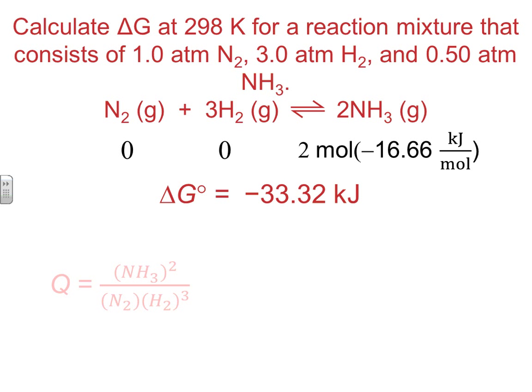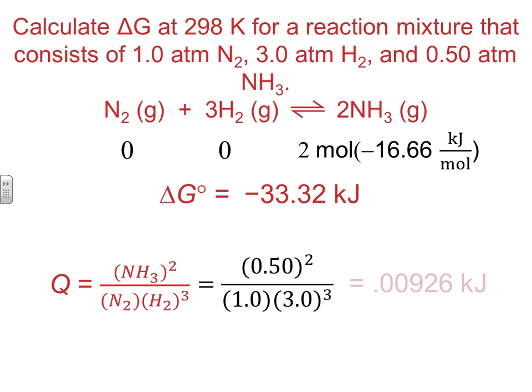Now I also need to establish what Q is. Next, I would need to set up the Kp expression. In this case, since we're talking about pressures, it would be the pressure of NH3 squared over the pressure of N2 times H2 cubed. The values from the problem up above would be as follows. So when you plug those into the calculator and calculate, you end up with a Q of 0.00926 kilojoules. So I've got my delta G, and I have my Q value.